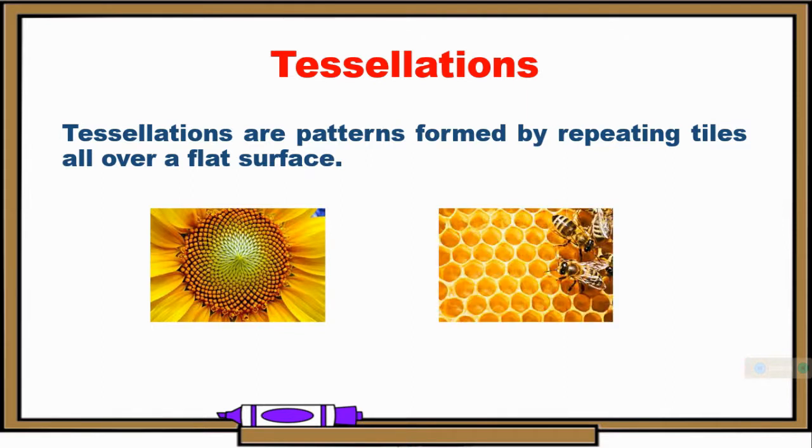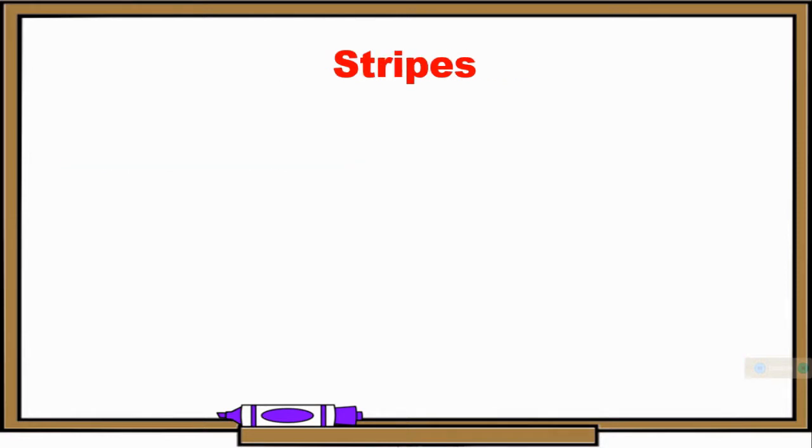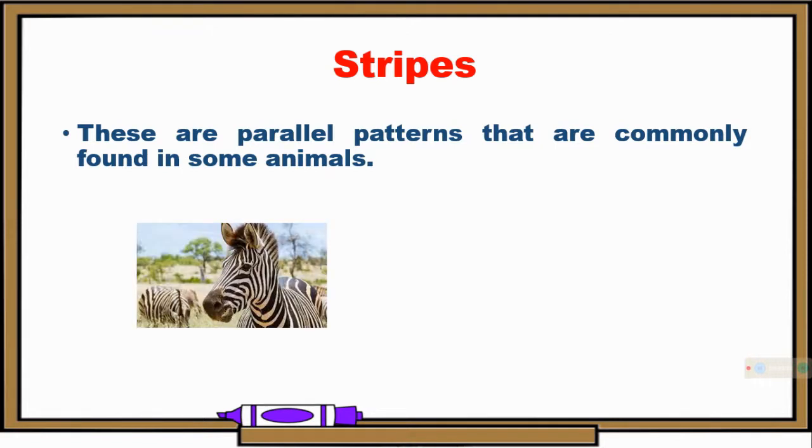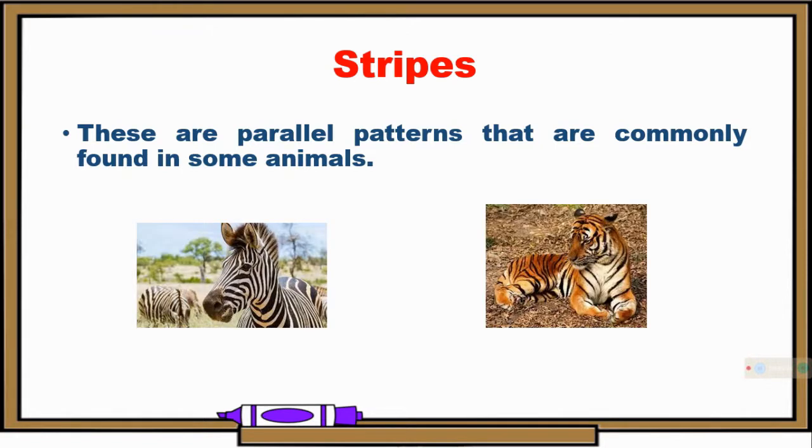Also, a honeycomb. So, the patterns are the same in a flat surface. Now, let's talk about stripes. These are parallel patterns that are commonly found in some animals. Popular examples are the stripes of a zebra and the stripes of a tiger.